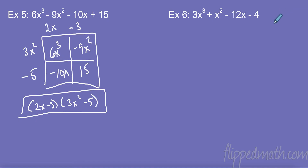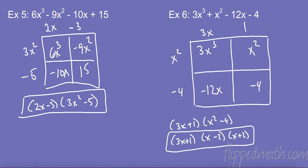I want you to try this one all on your own — pause the video. Alright, first, second, third, fourth term — I have four terms and four spaces in my box, so I put them right in. Over here I took out negative 4, then x², 3x, and 1. My first answer was 3x plus 1 and x² minus 4. But I noticed x² minus 4 are perfect squares, so I use the difference of squares trick: square root of x² and square root of 4 gives me x minus 2 and x plus 2.